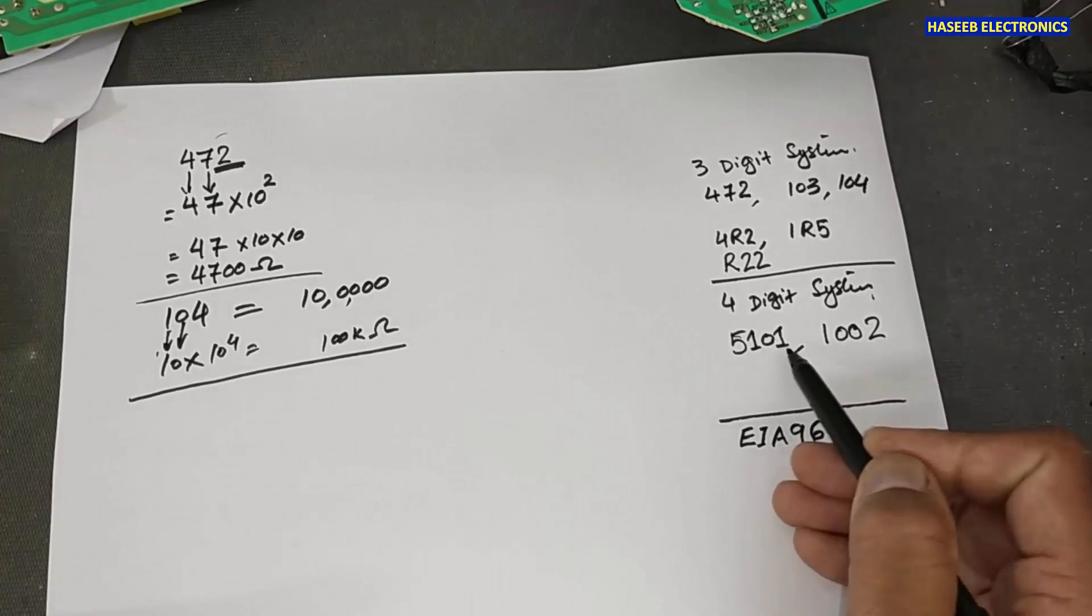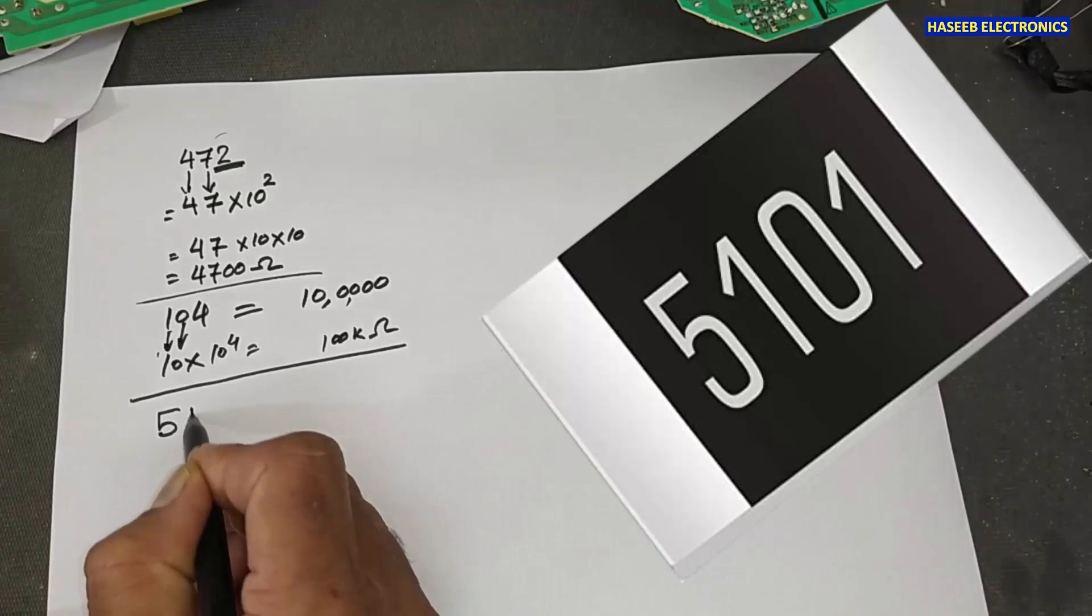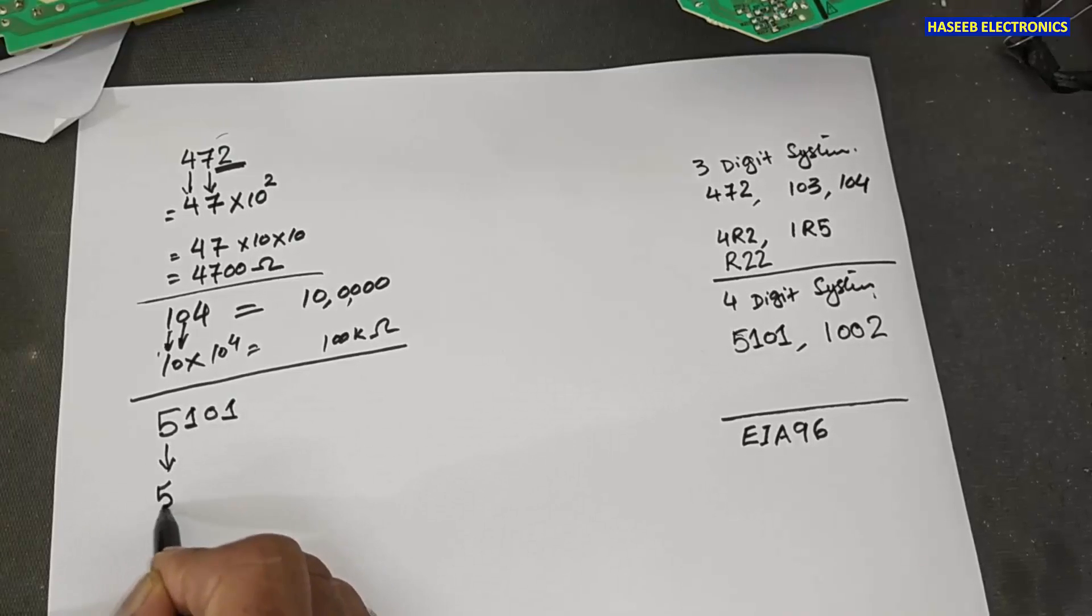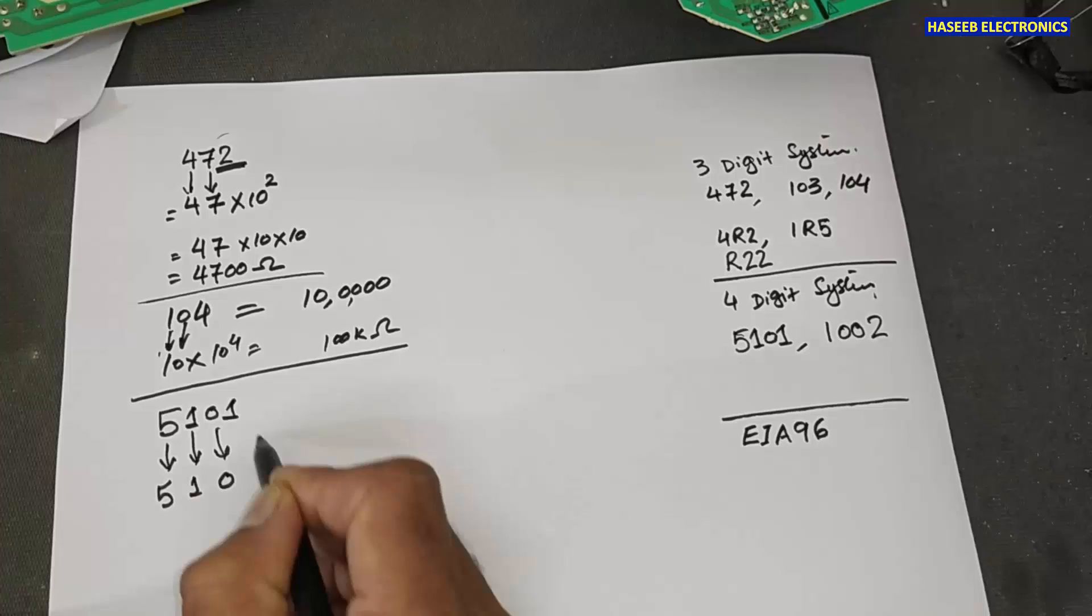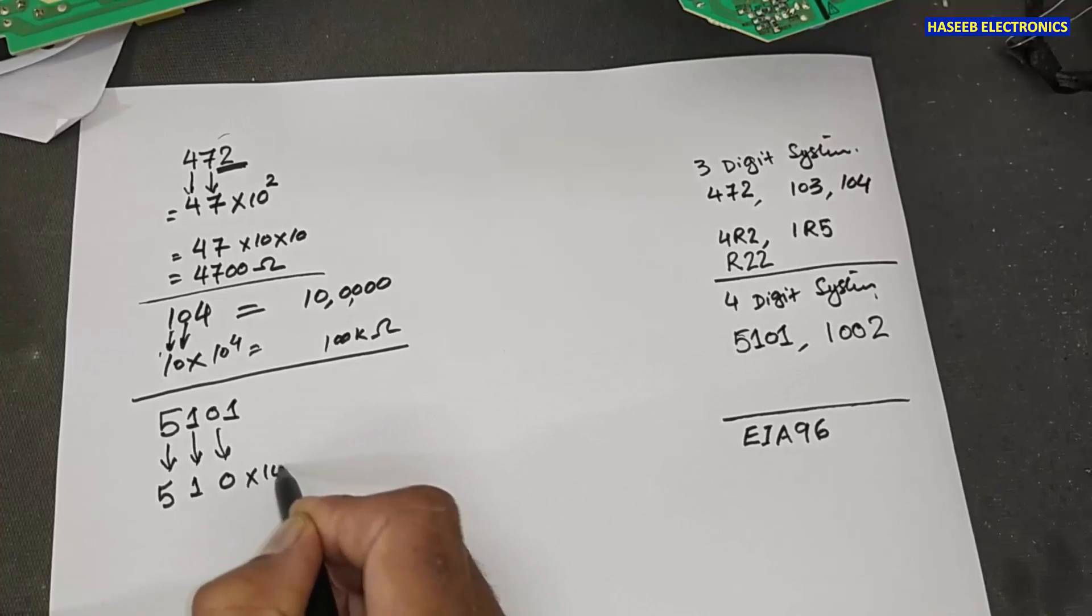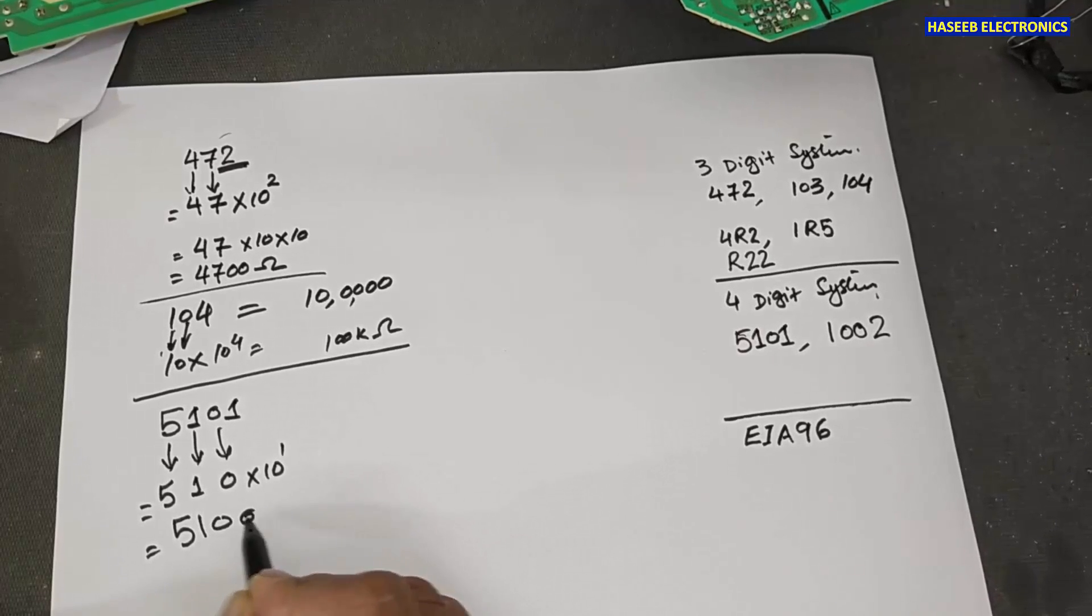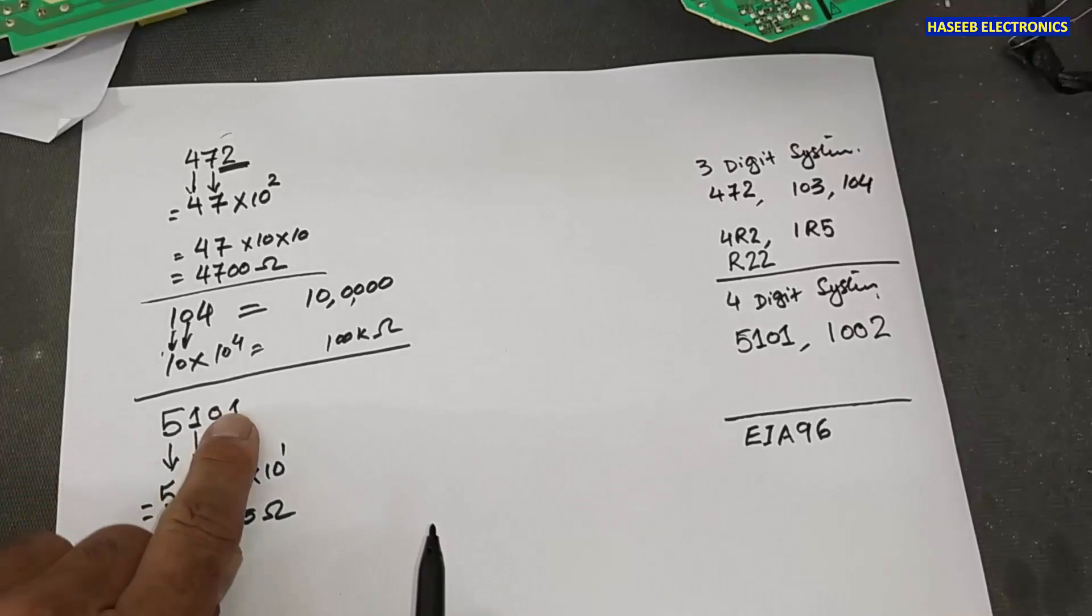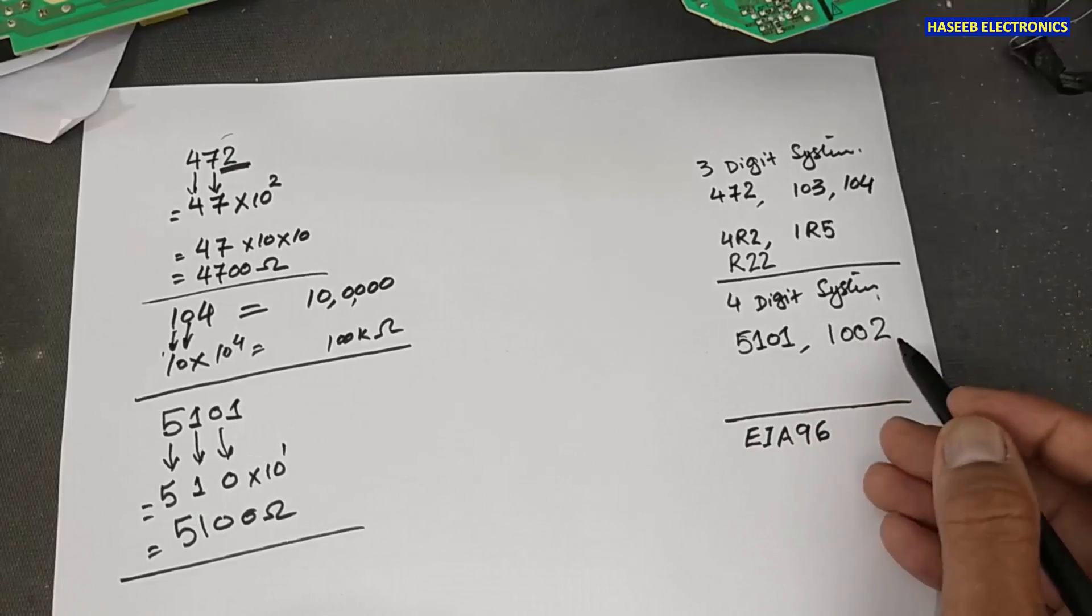If you have four-digit system, 5, 1, 0, 1, if it will come here 5, 1, 0, 1. 5, 1, 0 and 10 raised to power 1. It will become 5, 1, 0, 0. That we will add 1, 0.